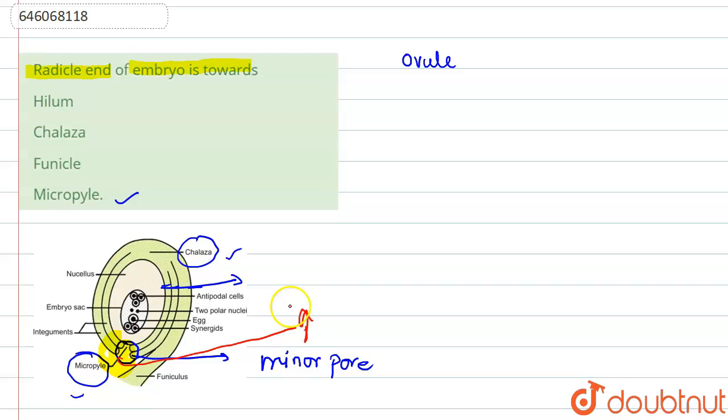This micropylar end remains as a small pore in case of a seed. When the seed is formed from this ovule, this small minor pore is present here.